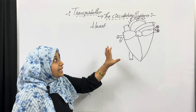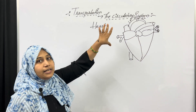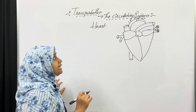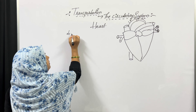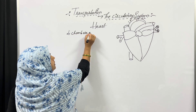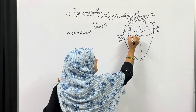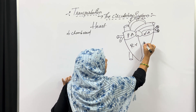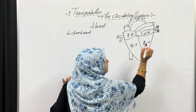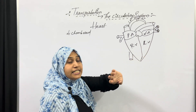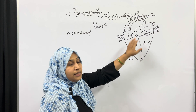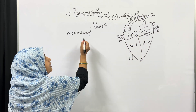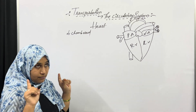The heart is four-chambered. The four chambers are: right auricle (right atrium), right ventricle on the right side; and left auricle (left atrium) and left ventricle on the left side. The left side chamber is narrower when compared to the right side.